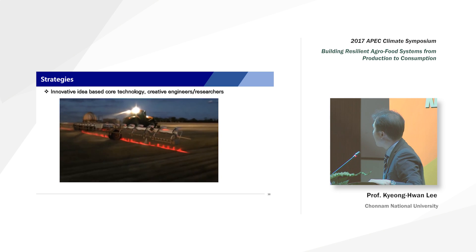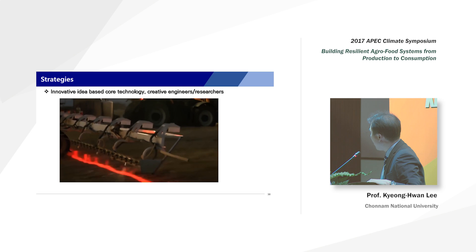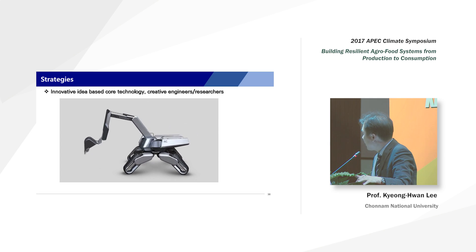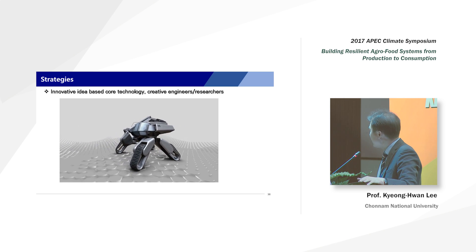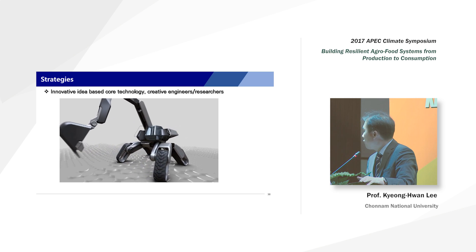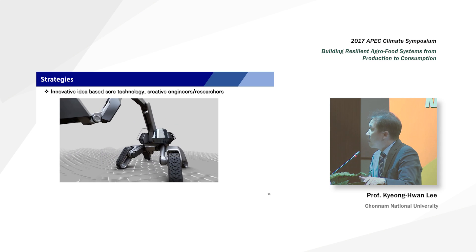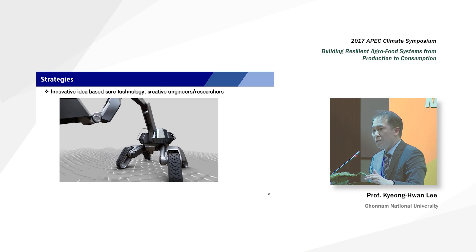This technology can identify individual plants and spray only the plants, saving significant amounts of chemicals. In the future, agricultural machines will transform. To improve intelligent agriculture production systems, we need innovative ideas and creative researchers. We are now working on this project and educating our research group for this work.